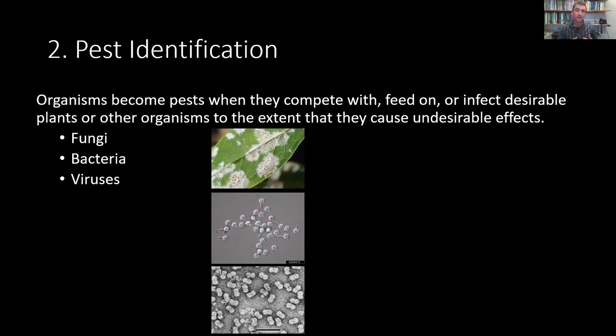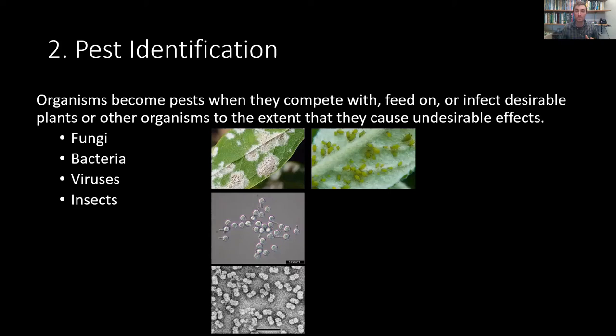Most of the time a virus won't really kill your plant — it actually wants to keep the plant alive. For agriculture, viruses become a problem because they reduce the overall yield of the crop. Whether you're growing citrus, grapes, or any other agricultural commodity, viruses can really mess up your production — until we discover and encourage resistance among the plants and introduce that into the trade.